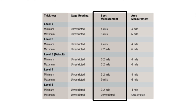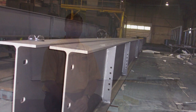For example, assume that the specification requires a 4 to 6 mil application of primer. The actual minimum and maximum spot and area thickness requirements are shown for each of the five restriction levels. SSPCPA2 also provides guidance on the number of spot measurements to take on structural members, like those in a fabrication shop.